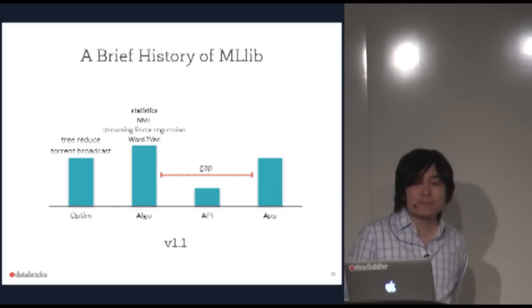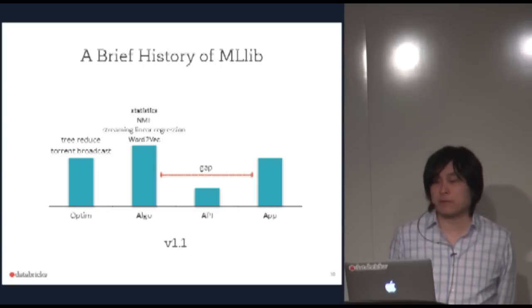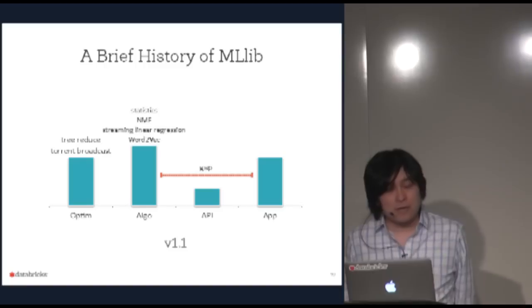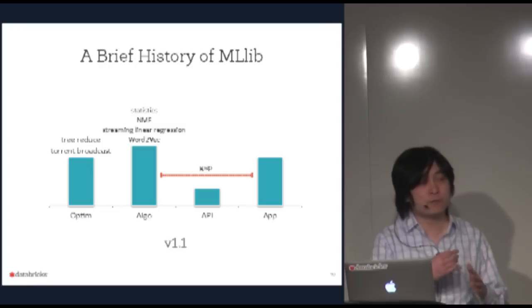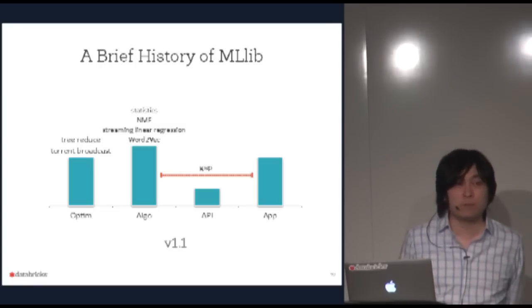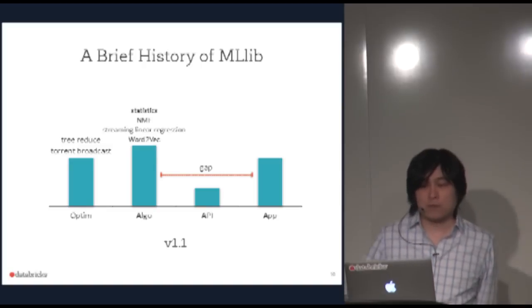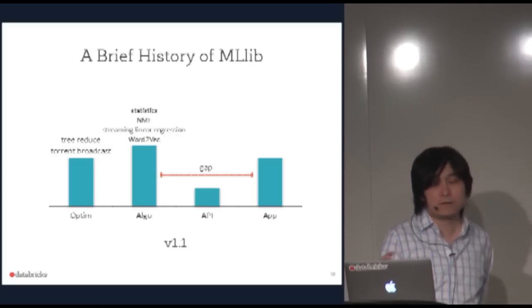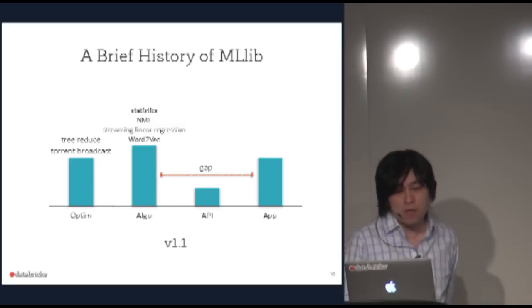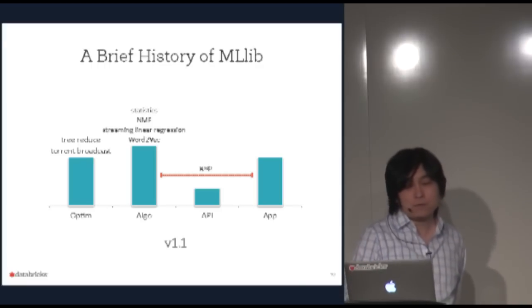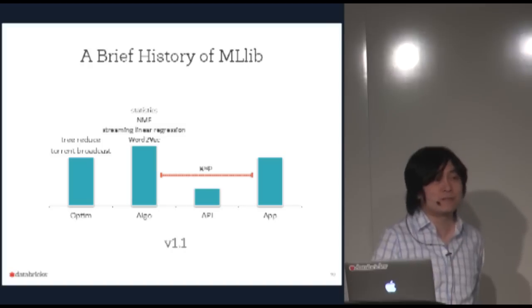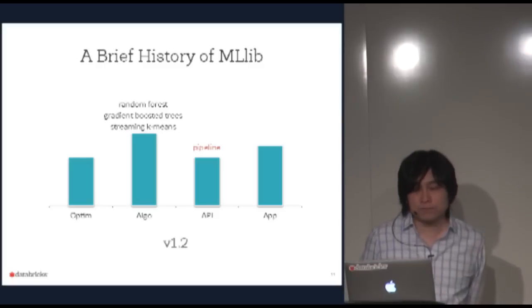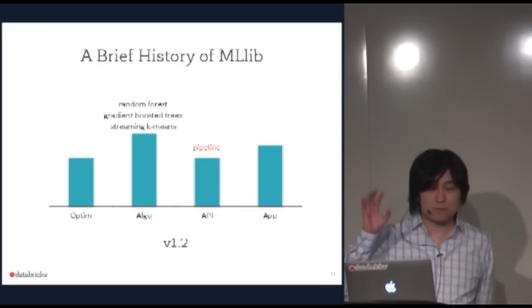In version 1.1 we added a statistics toolbox, non-negative matrix factorization, streaming linear regression integrated with Spark Streaming, and Word2Vec as a feature extractor. On the optimization side, we introduced tree-reduce and torrent broadcast to boost performance by about 5x. However, there was a growing gap between the algorithm layer and the application layer — we hadn't thought much about the API side or whether it was easy for users to build applications.